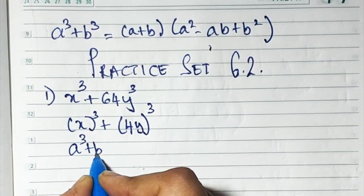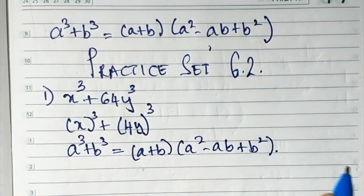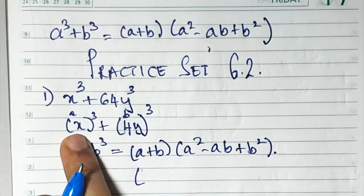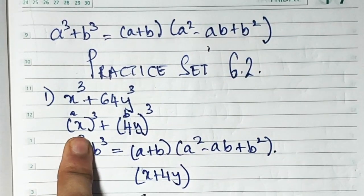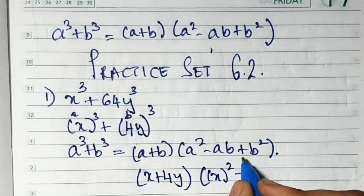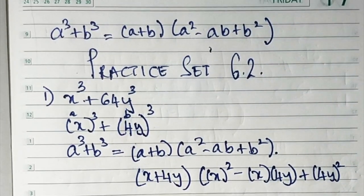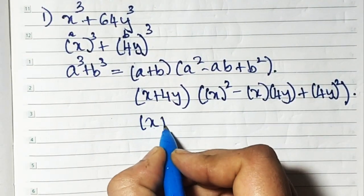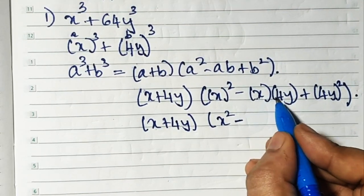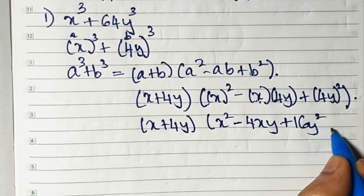Write the formula: a cube plus b cube is equal to a plus b times a square minus ab plus b square. Here a is x and b is 4y. So substitute: a plus b is x plus 4y. Then a square means x square, minus a into b means x into 4y, plus b square means 4y whole square. Now solve: x plus 4y remains, then x square minus 4xy plus 16y square. That's the answer.